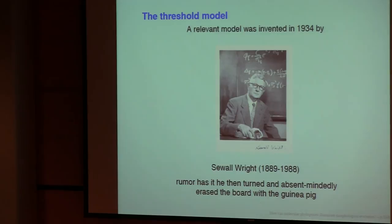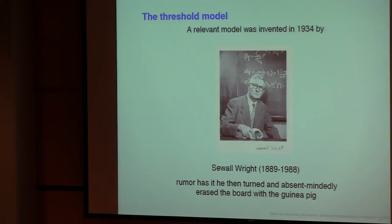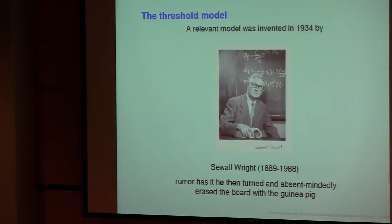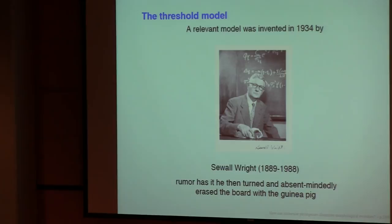Sewell Wright was an absent-minded professor. By the way, I knew him, many of us knew him because he lived until 1988, almost a hundred years. And he was an absolute model of an absent-minded professor. And he was the world's worst lecturer. He would go to the blackboard and mumble while writing equations with his back to the audience. The audience wouldn't understand anything he said. He furiously denied that he had erased the board with the guinea pig. But many people who had taken courses from him had seen him bring guinea pigs into the lecture room to show their colors to the students.